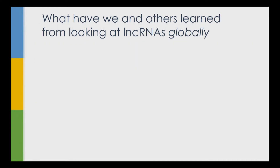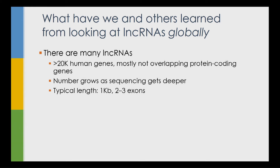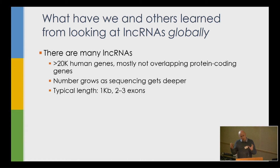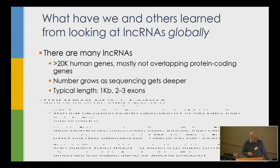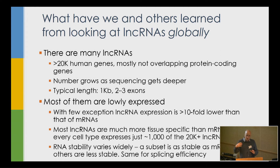My lab, like most other labs, has done a lot of global studies looking at transcription genome-wide and annotating lncRNAs. We know today that there are more lncRNA genes than protein-coding genes, and their number grows as sequencing becomes deeper. They're somewhat shorter than mRNAs — about 1 kb in length on average, typically spanning 2 or 3 exons, compared to 7 or 8 for a typical mRNA. Many are lowly expressed, about an order of magnitude lower than a typical mRNA, with some exceptions that are very abundant.